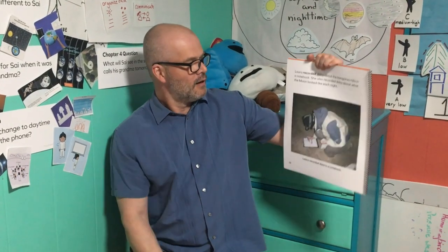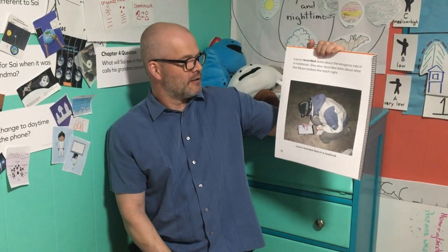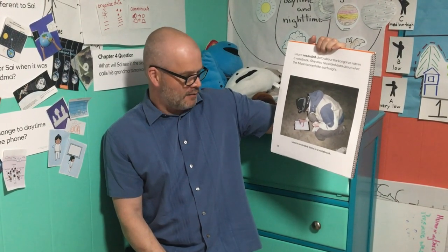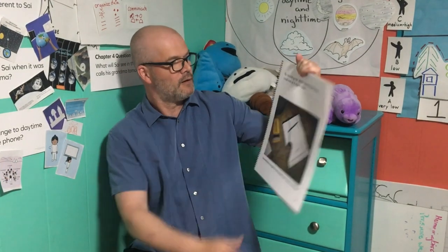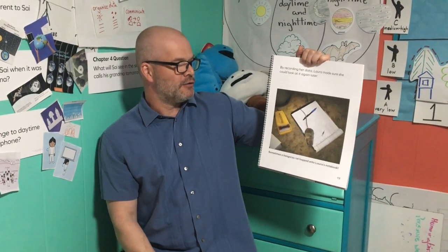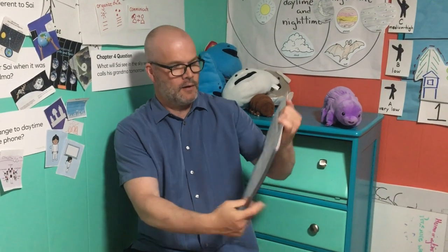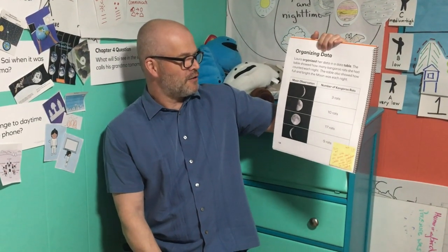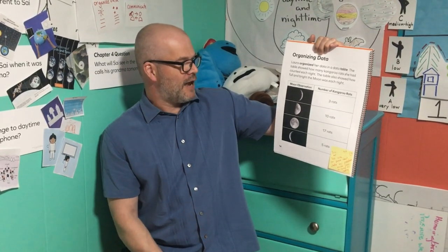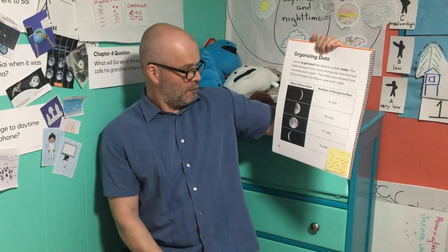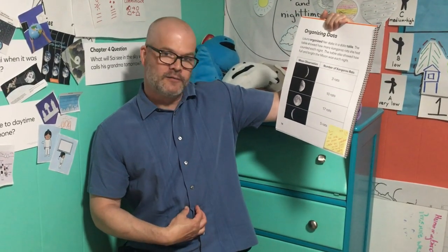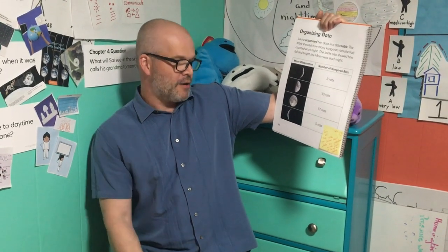Laura also looked at the sky while she was observing the kangaroo rats at nighttime. On some nights, the moon was full and bright in the sky. On other nights, the moon was less full and less bright in the sky. Laura recorded data about the kangaroo rats in a notebook. She also recorded data about what the moon looked like each night. By recording her data, Laura made sure she could look at it again later. Laura organized her data in a data table. The table showed how many kangaroo rats she had counted each night, and also how full and bright the moon was each night. Turn and talk with your partner about whether your predictions match what we have read so far.